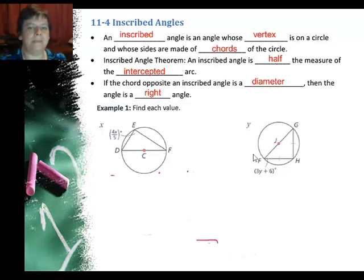Why is that? Well, if it's a diameter, it cuts the circle in half. So this must be 180 degrees. And then if that's 180 degrees, then that means this has to be half of it, by the inscribed angle theorem.